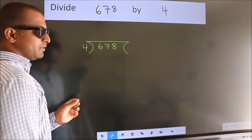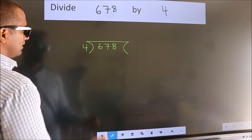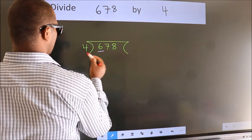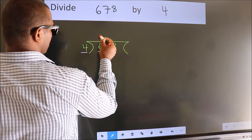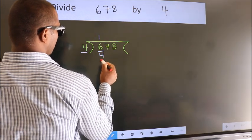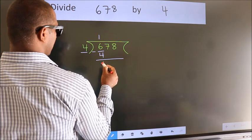This is your step 1. Next, here we have 6, here 4. A number close to 6 in the 4 table is 4 once 4. Now we should subtract. We get 2.